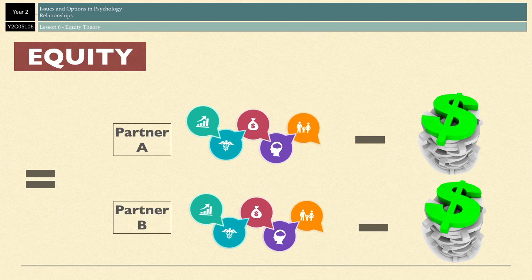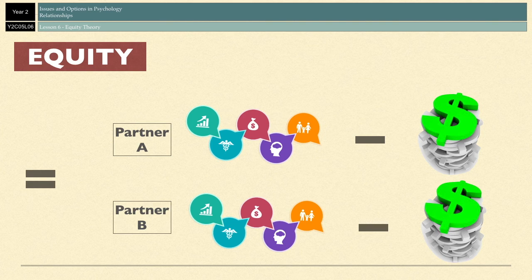Equity Theory proposes that the winning formula in relationships is like this: one partner's benefits minus their costs should be equal to another partner's benefits minus their costs. What matters is that both partners' levels of profit are roughly the same. This doesn't mean that each individual partner's costs and rewards have to be the same; however, the amount of profit that each partner is left with at the end needs to be roughly the same.